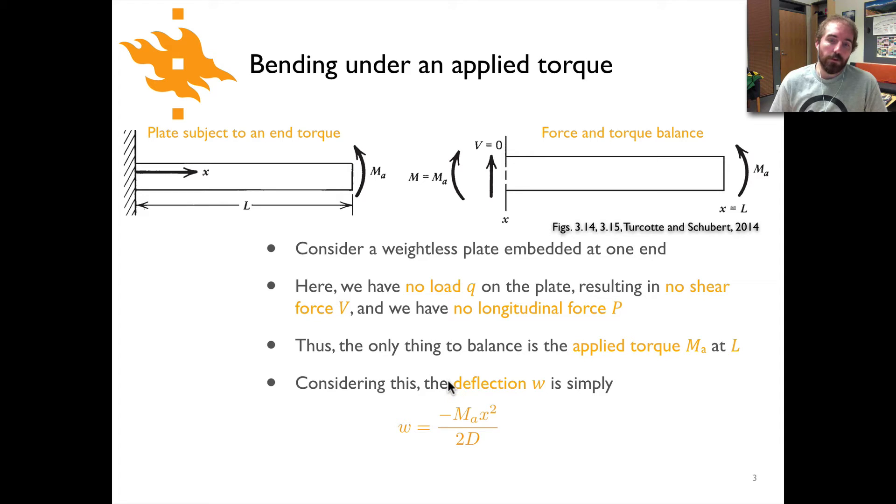In this case, the deflection can be calculated using the equation from the previous video lecture. What you would come up with is a deflection that looks like this, where W is equal to minus MA—this is our torque that's applied—times x squared divided by 2 times D. Again, D is the flexural rigidity of this plate, which is an elastic material property of the plate itself.